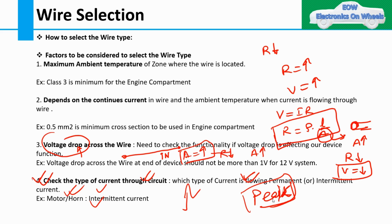These are the factors that affect wire type selection. When selecting a wire, you need to consider all these factors in detail. I'm keeping this short because I've seen many viewers drop off within one or two minutes. Please understand all four points, and then I will provide the next example of how to select wire CSA for a particular wire.